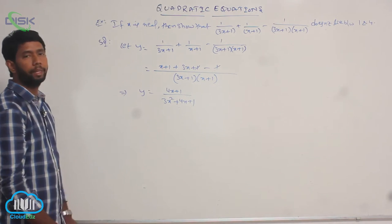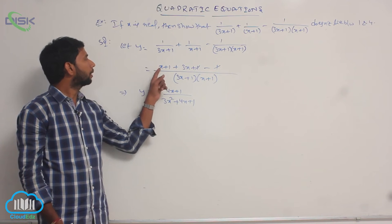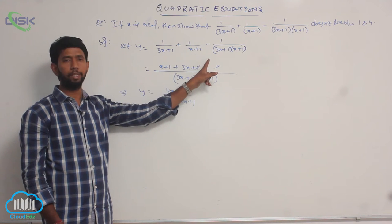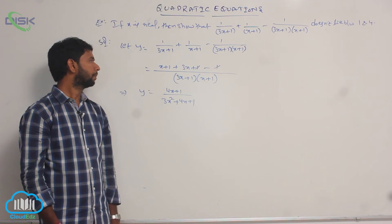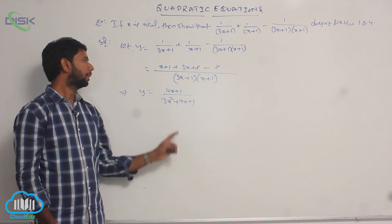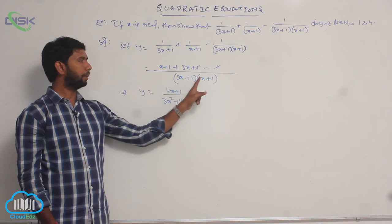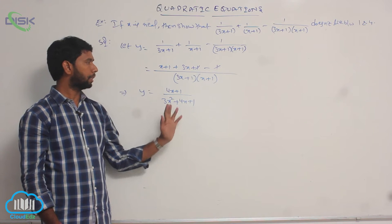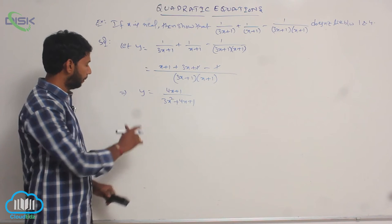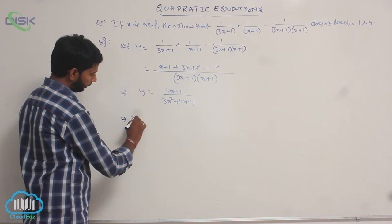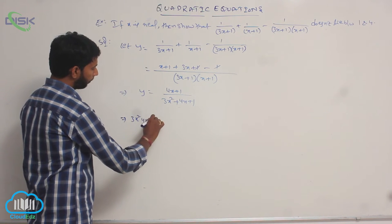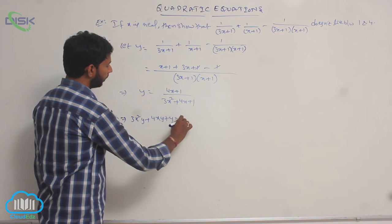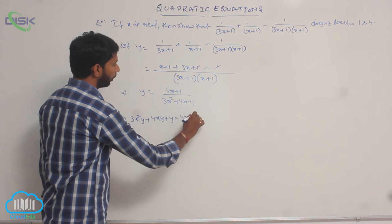So y is equal to (4x+1) / ((3x+1)(x+1)). In the numerator, (x+1) + (3x+1) - 1, the +1 and -1 get cancelled, giving 4x+1 by (3x+1)(x+1), and simplifying the denominator we get 3x²+4x+1.